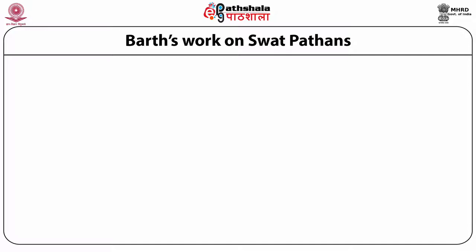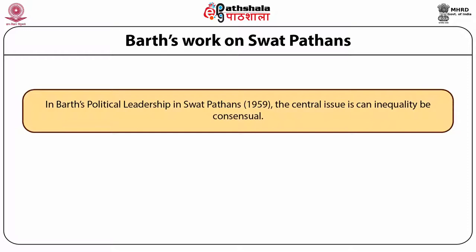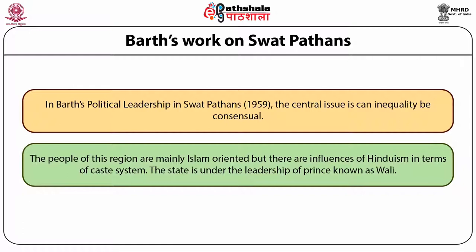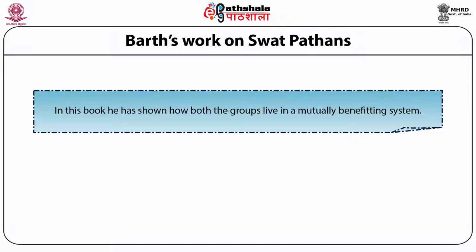The most important work by Frederick Barth is on the Swat Pathans of Pakistan. In his book Political Leadership among Swat Pathans, published in 1959, the central issue is: can equality be consensual? Whether inequality still has meaningful existence in the exchange process. Barth says the people of this region are mainly of Islamic faith, but aspects of a caste-like system were also prevalent. All of Swat was under a leadership known as Wali. This work shows how different groups in this region are mutually benefiting each other — that is the reason for Transactionalism.